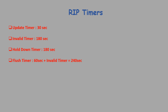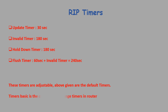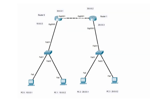The flush timer starts after the route has been declared invalid, so the total time is 180 plus 60, equaling 240 seconds. All these timers are adjustable using the command 'timers basic'.